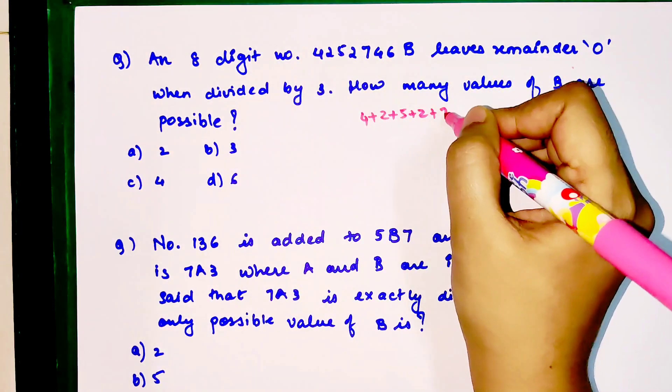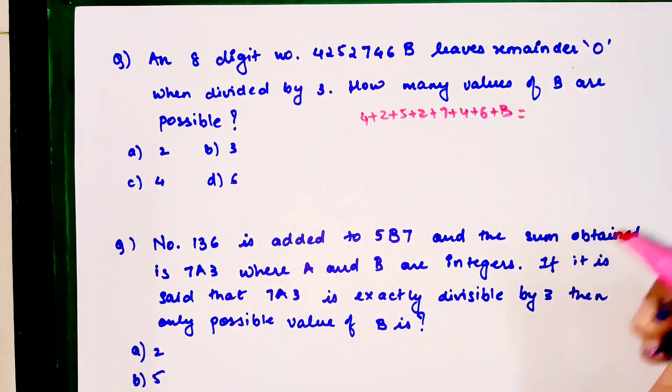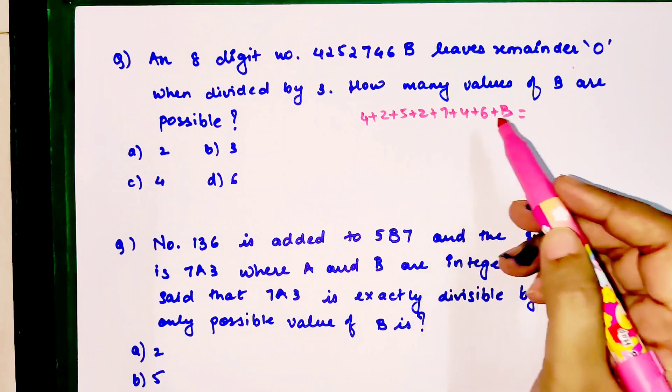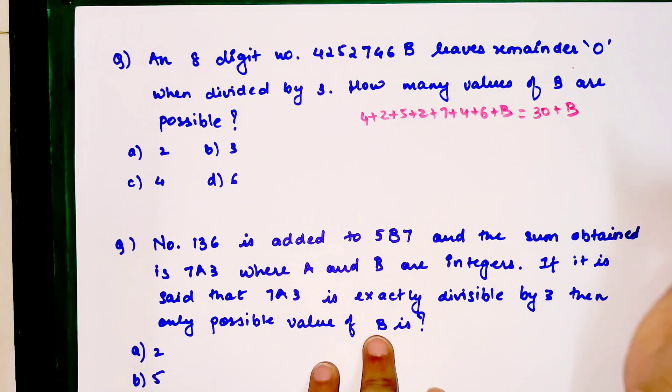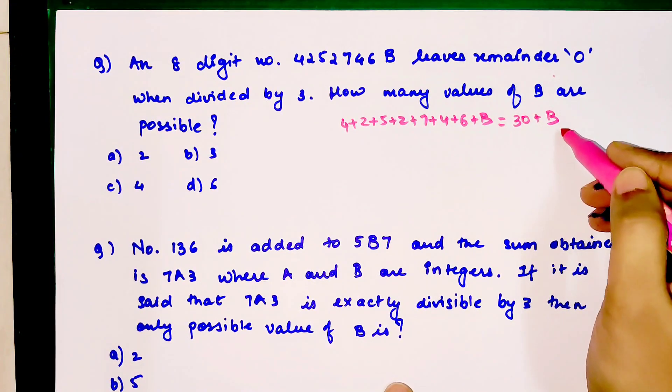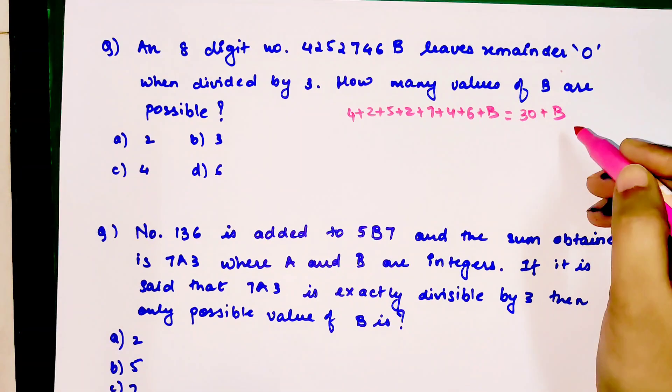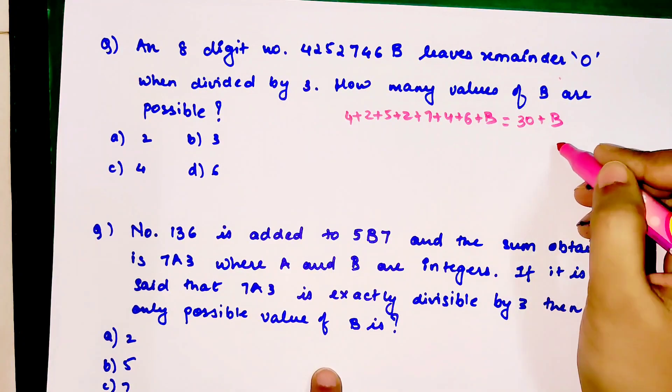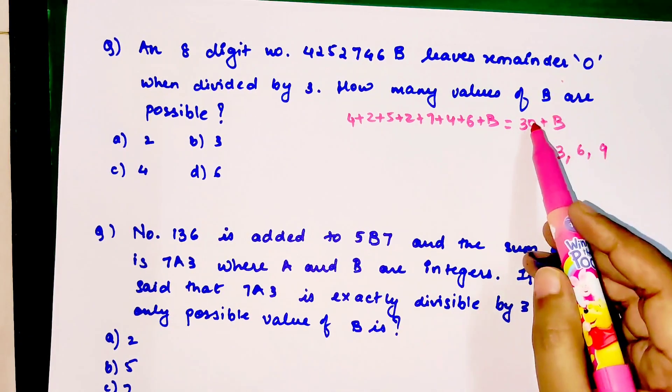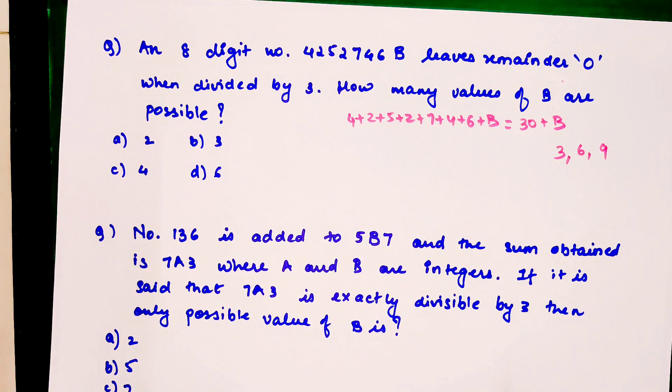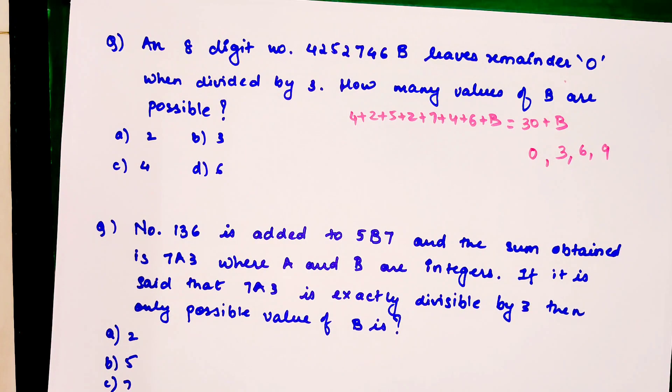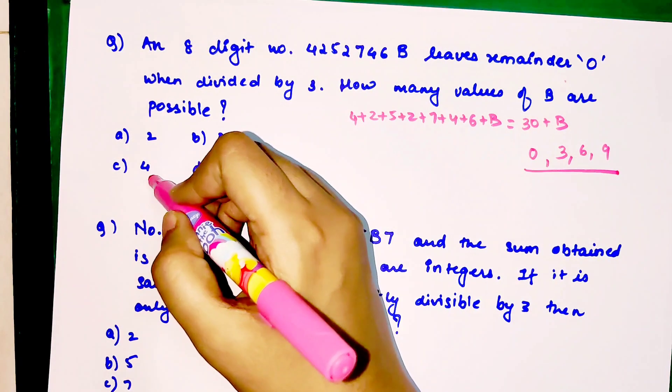We'll check for the divisibility test of three. 4 plus 2 plus 5 plus 2 plus 7 plus 4 plus 6 plus B equals 30 plus B. 30 itself is completely divisible by 3, so we can add 0, 3, 6, or 9 to make it divisible. We forgot we can even add 0 because 30 plus 0 is 30, which is divisible by 3. So we can have four different values of B: 0, 3, 6, and 9. The answer is option D, 4 values.